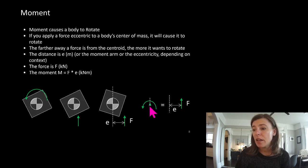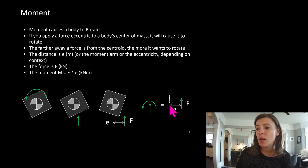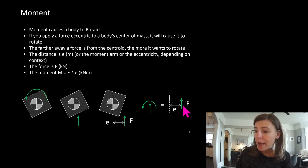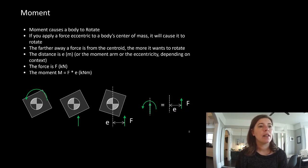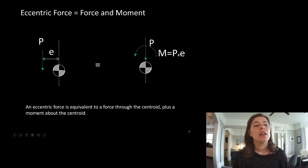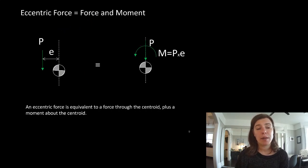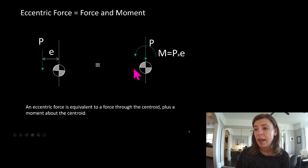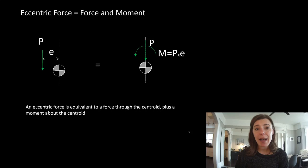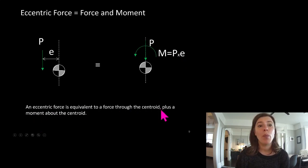A force through the centroid plus a moment is the same as a force some distance from the centroid. The moment is the multiplication of that force times the eccentricity. So an eccentric force is equivalent to a force through the centroid plus a moment, where the moment equals force times eccentricity. To have a moment, you need a force with an eccentricity — those two things are equivalent.